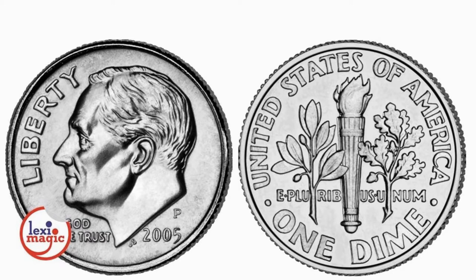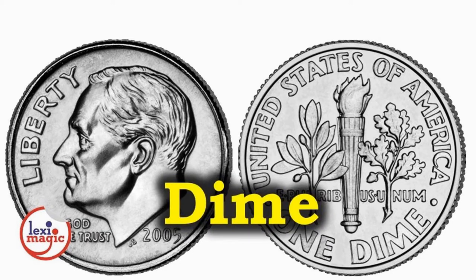Dime is a ten-cent coin. When the dime came into circulation in 1792, it was called disme, which means tenth in French. Gradually, the S in the word was dropped from usage.